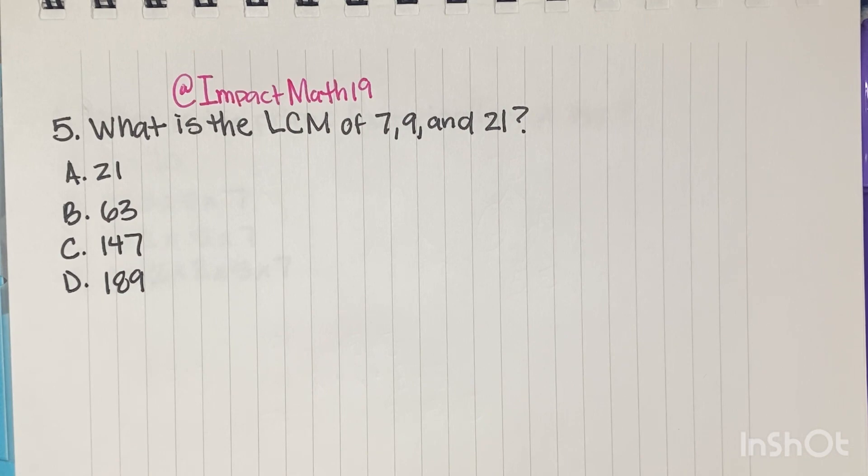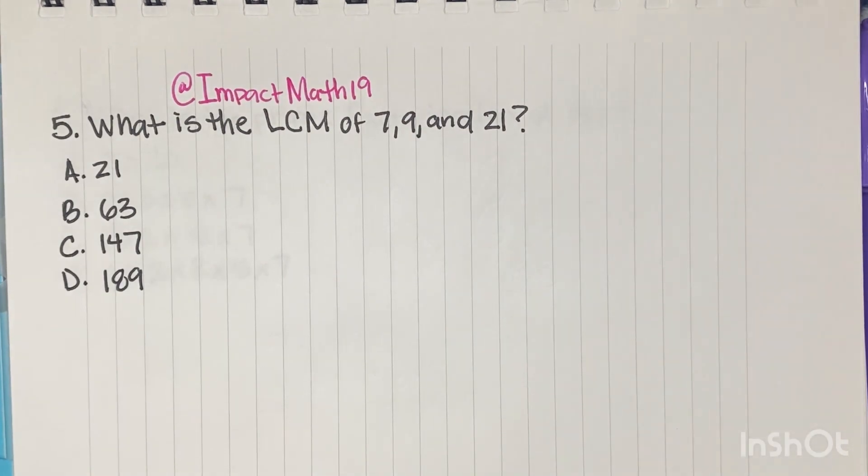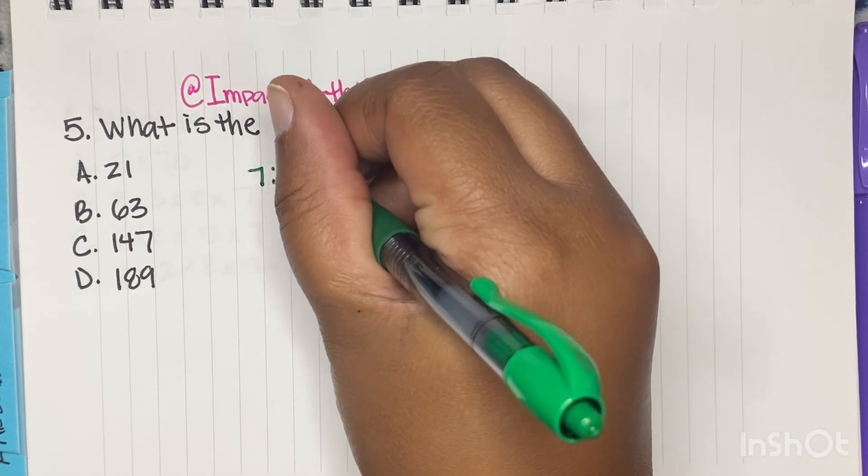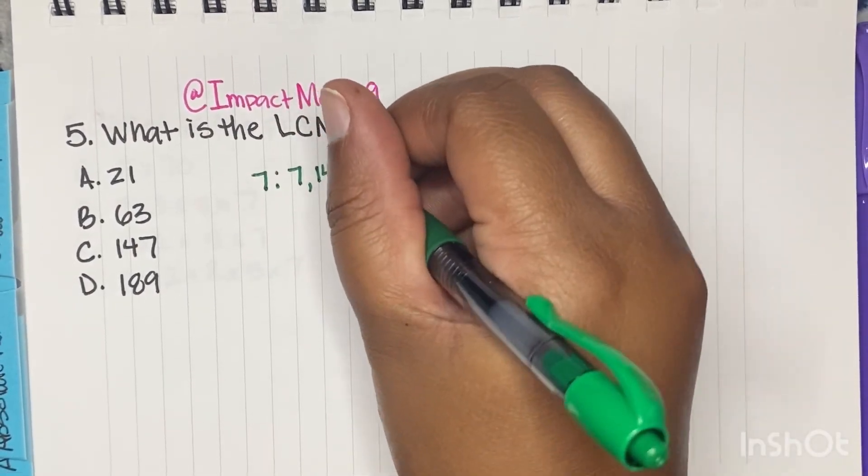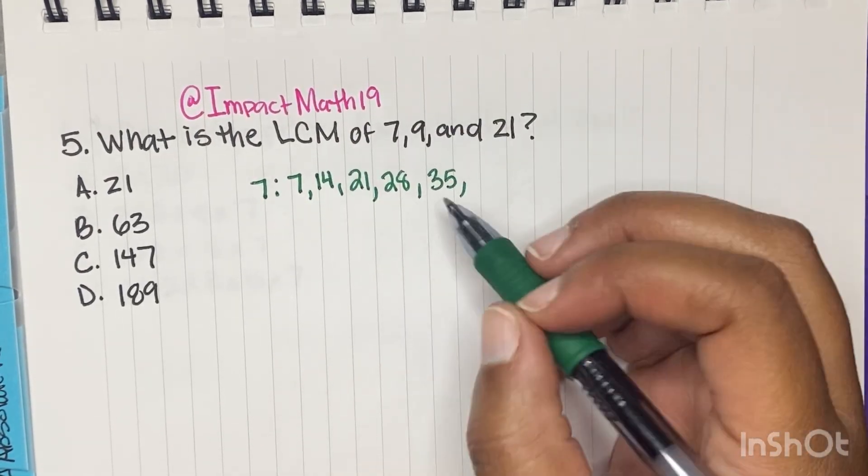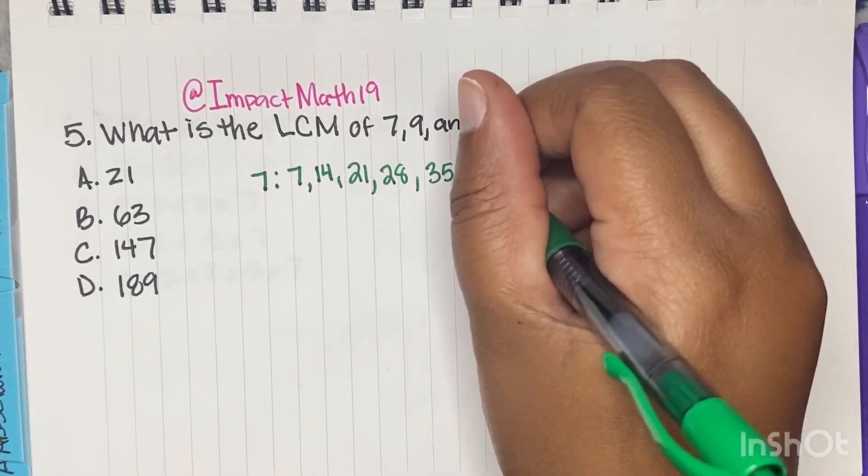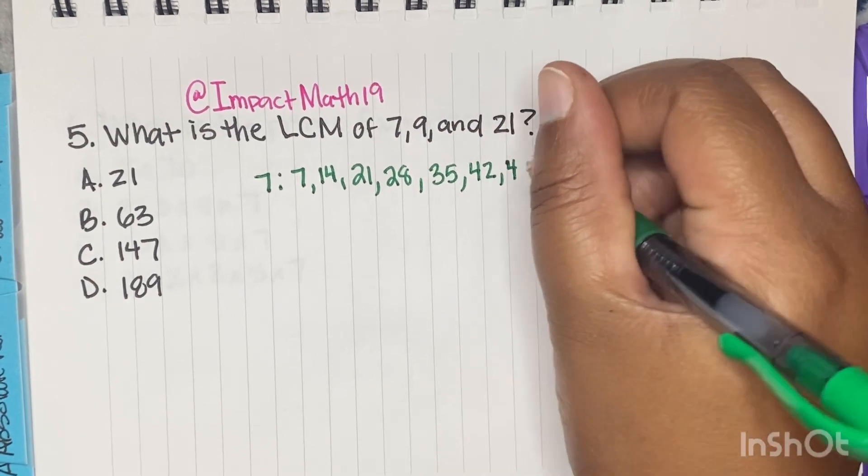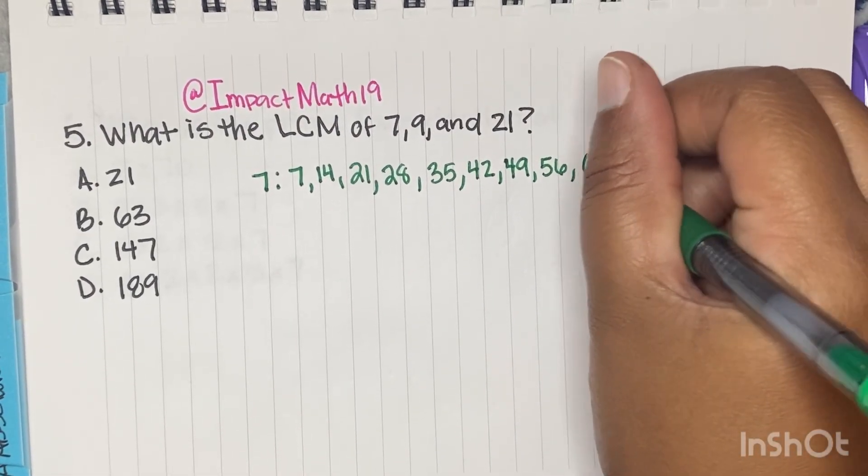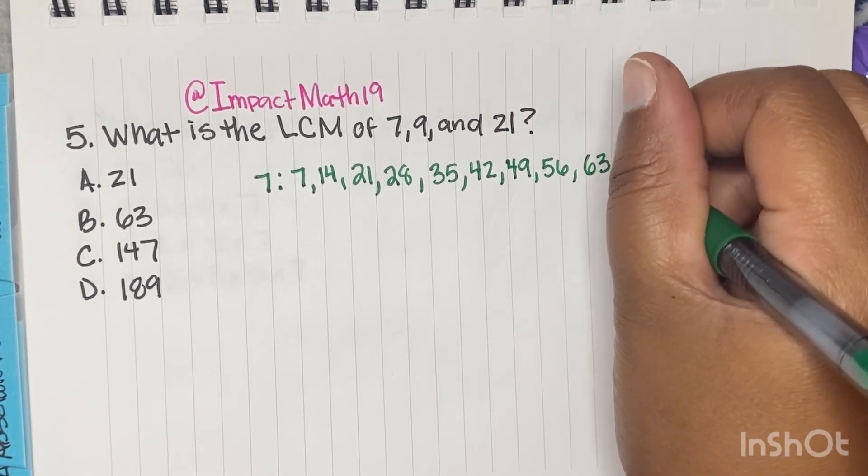All righty. Let's go to the next. So number five says, what is the LCM of seven, nine, and 21? So remember, we're looking at least common multiple. And so when we think about multiples, we're thinking about numbers bigger than the ones that they give us. So let's start with seven. So our first multiple of seven is seven, seven times one. Our second multiple is seven times two, which is 14. Our third multiple, seven times three is 21. Our fourth multiple is 28. Fifth multiple is 35. And our sixth multiple is 42. Then seven times seven, which is our seventh multiple is 49. And then eighth multiple is 56. And our ninth multiple is 63. And our 10th multiple is 70. So let's stop there.